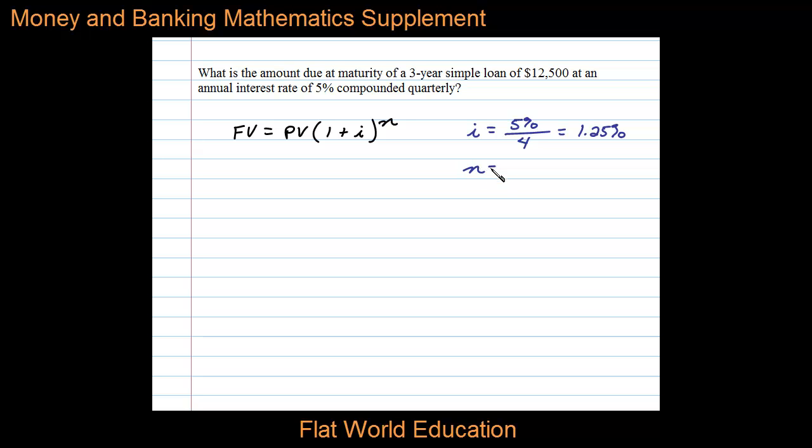The number of periods n for this three-year loan is going to be three times four quarters per year or 12 periods.